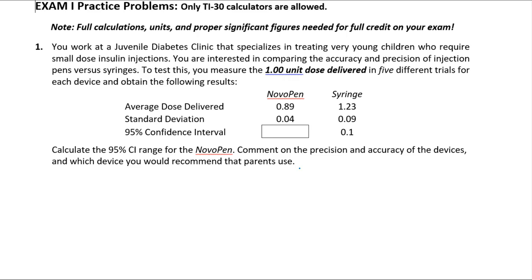This first one is a really good accuracy and precision question relating to things we've been doing in lab. We have an applied problem to illustrate this: a juvenile diabetes clinic. The target — or more specifically, the true value — is to deliver 1.00 units as a dose. We have two options: the Nova pen and a traditional syringe.